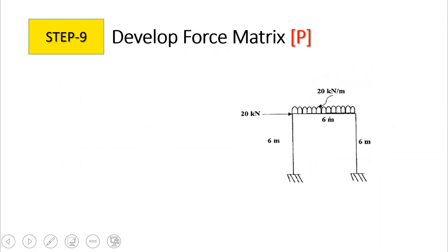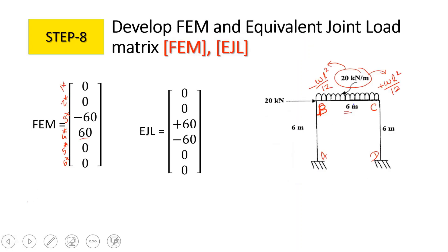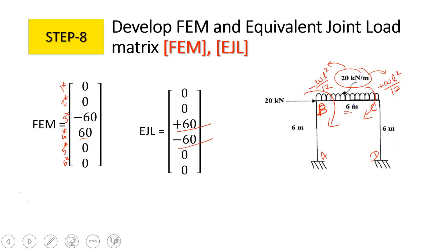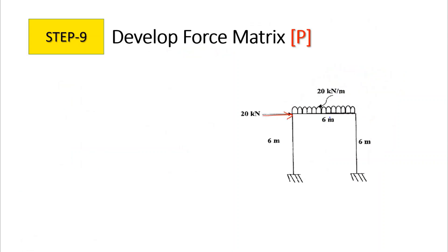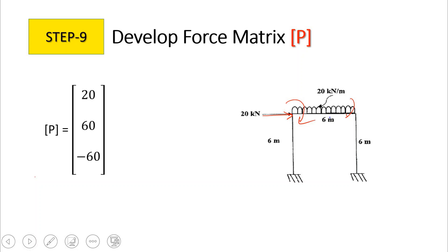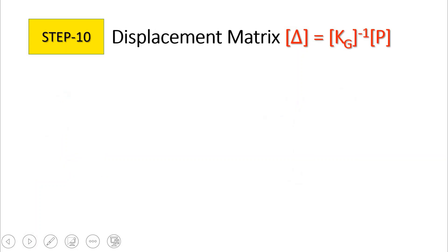The ninth step is to develop the force matrix, which contains forces corresponding to each system coordinate. From the previous step, at the location of 2* and 3* the equivalent joint loads are 60 and −60. At R1, there is already a 20 kN·m load given in the question. So the force matrix is: R1 = 20, R2 = 60, R3 = −60.